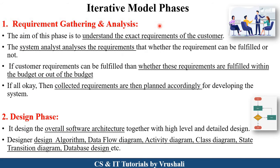Now, the iterative model phases — we have already discussed these phases in the software development lifecycle in detail. The first phase is requirement gathering and analysis. Here the project analyst gathers all requirements from the customer. There is communication between the customer and the project team. The system analyst analyzes whether the particular requirements can be fulfilled by the project team, and whether they are within budget or out of budget. If all is okay, they collect all the requirements and plan the complete project, deciding the start of the project and the different phases.